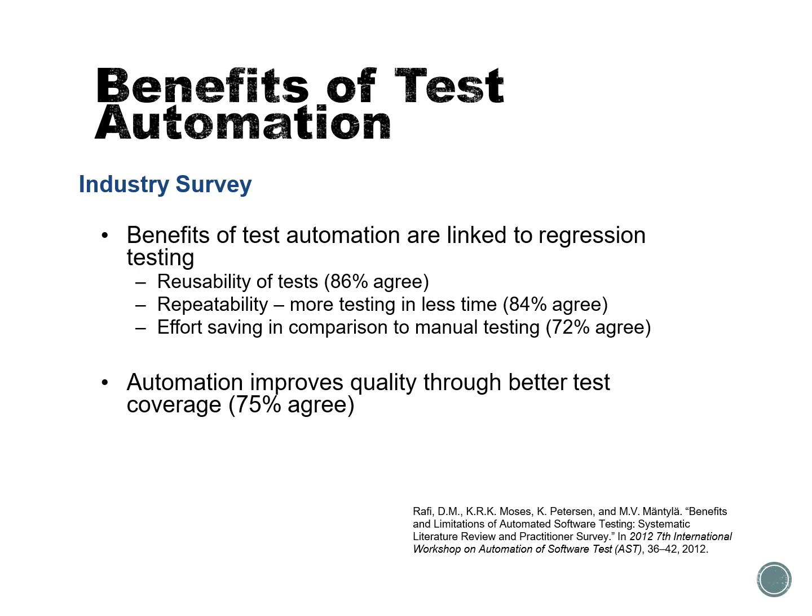There is also strong belief that automation improves quality through better test coverage because even smart systems can identify branches they haven't tested and seek out ways to test missing things. However, this type of automation requires very sophisticated tools to actually capture these things.